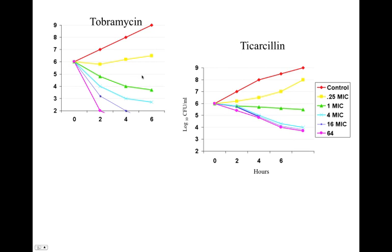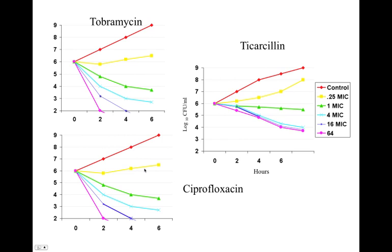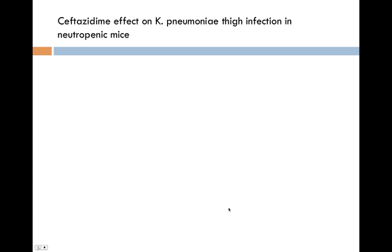So tobramycin is a concentration-dependent killer. Let's give you one more — which one of these do you think this is? This one looks much more like, as we increase the concentration, we see increased effectiveness. So this is a concentration-dependent killer — Cipro, right.